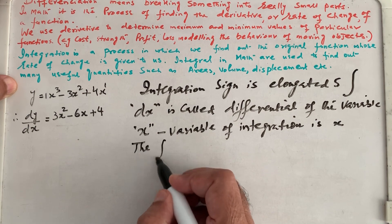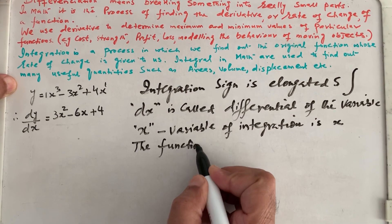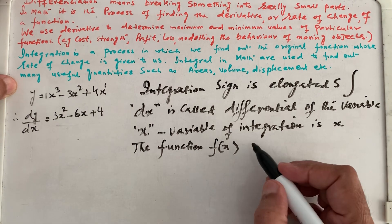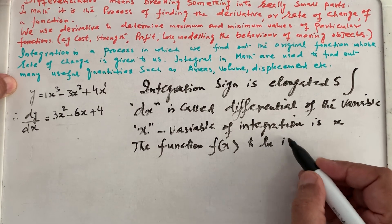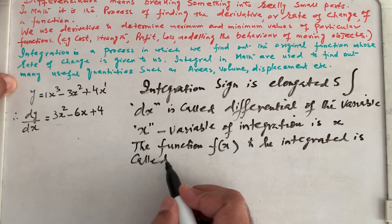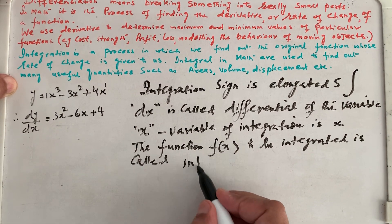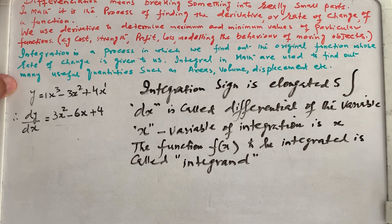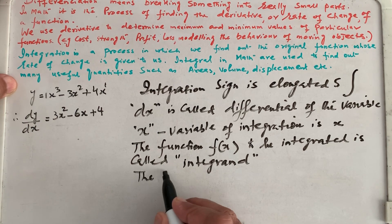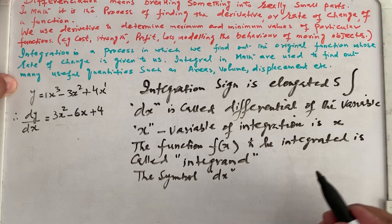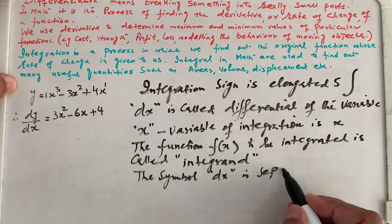The function F(x) which is being integrated is called the integrand. These are the terminology we use in integration. The symbol dx is separated by a space from the integrand.